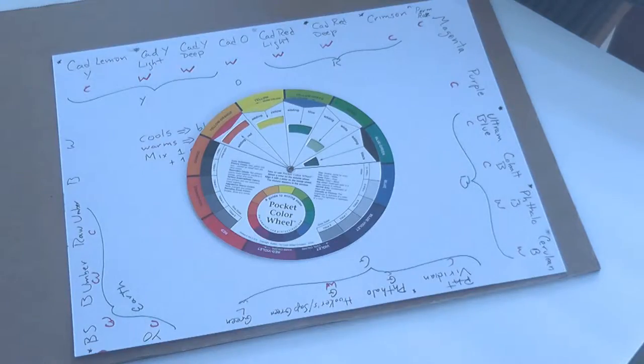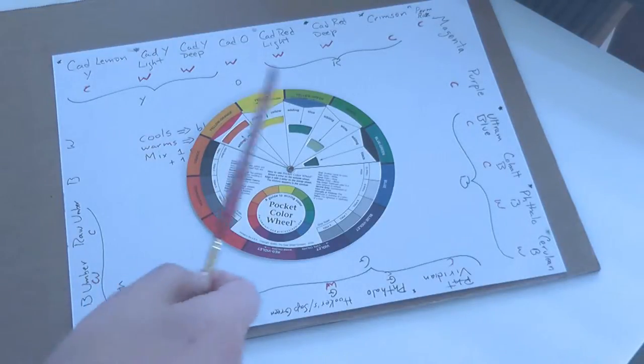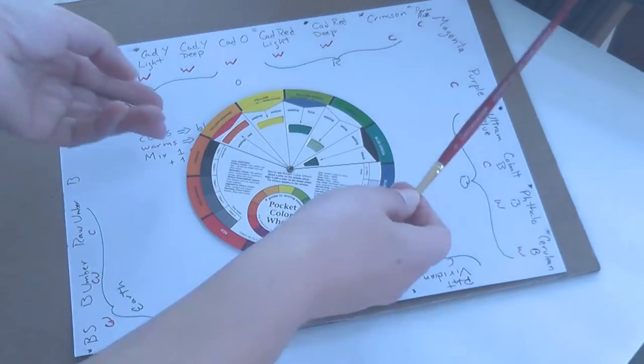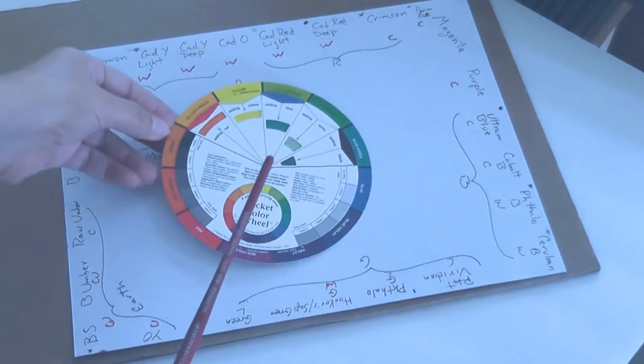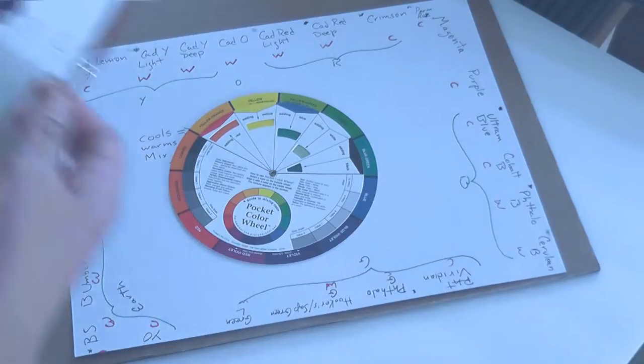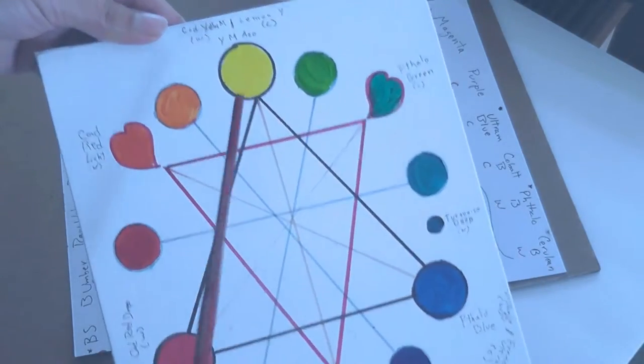Today I want to show you how I organize my art materials by color. I take as a reference the color wheel. If you don't have one like this, you can make your own using your own colors.